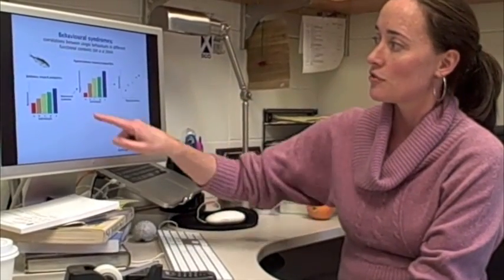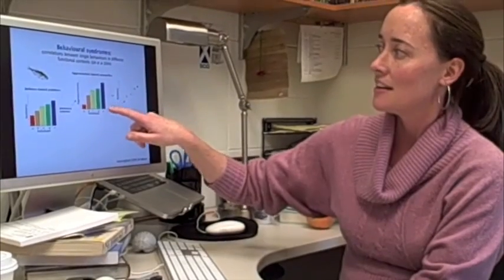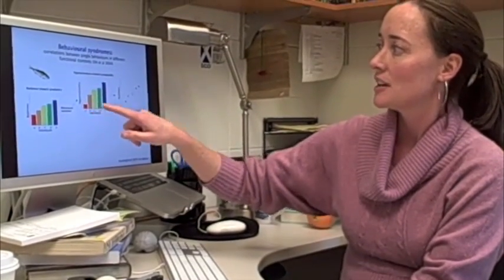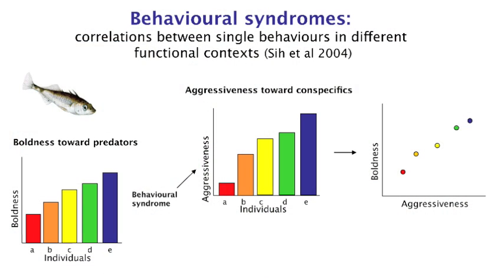And so what that means is that if you plot individual variation in boldness towards predators and individual variation in aggressiveness towards conspecifics in a correlation plot, what you find is a positive correlation between boldness and aggressiveness, or what we might call a boldness-aggression behavioral syndrome.